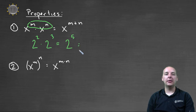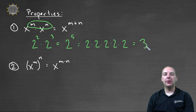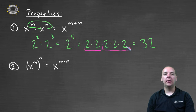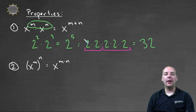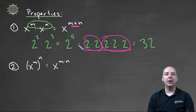And two to the fifth we can actually compute: that's two times two times two times two times two — two five times. Two times two is four, four times two is eight, eight times two is sixteen, sixteen times two is thirty-two. So we can see why this property works. If you have x to the m times x to the n, how many x's will you have total? You'll have m plus n — in this case two plus three, which makes five of them total. That's why we add the exponents for this particular property.